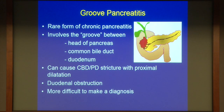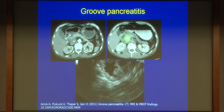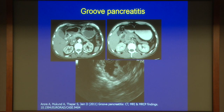Another interesting condition: groove pancreatitis. There is a lot of inflammation in the groove — the pancreatic-duodenal groove between the pancreas head, duodenum, and bile duct. Inflammation and soft tissue deposition can cause bile duct stricture and pancreatic duct stricture, just like chronic pancreatitis, making it really confusing. On EUS you can see hypoechoic soft tissue in the groove with a dilated pancreatic duct — it looks like cancer. With oral contrast, you may see cystic changes near the duodenum outside the pancreas. Even with EUS-FNA negative for cancer, you can't be 100% sure it's not cancer, and sometimes these patients end up having a Whipple because we can't exclude cancer.